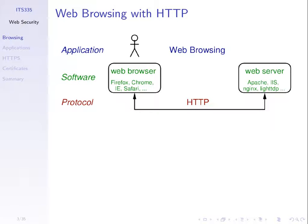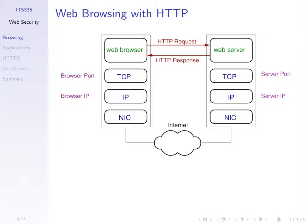We know how web browsing works, and the protocol used to communicate between web browser — the client — and web server is HTTP, the Hypertext Transfer Protocol. We send a request for a web page; the web server sends back that web page in a response. HTTP is a request-response protocol: just one request, one response. If I want another web page, I send another request to get another response. If I want to download the images in a web page, I send another request and get another response for each image.